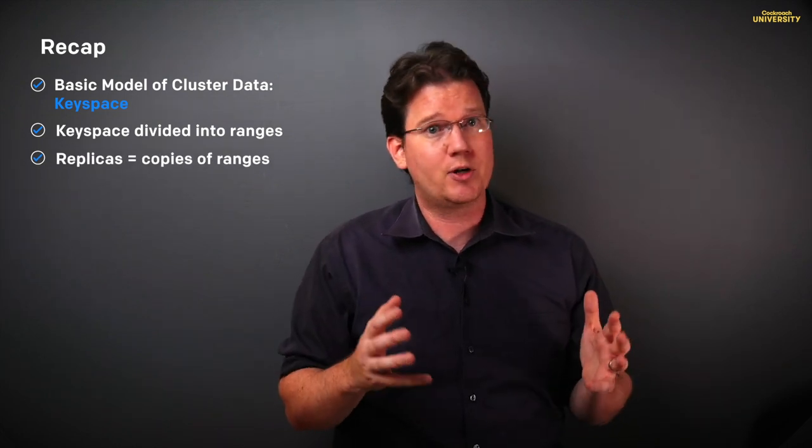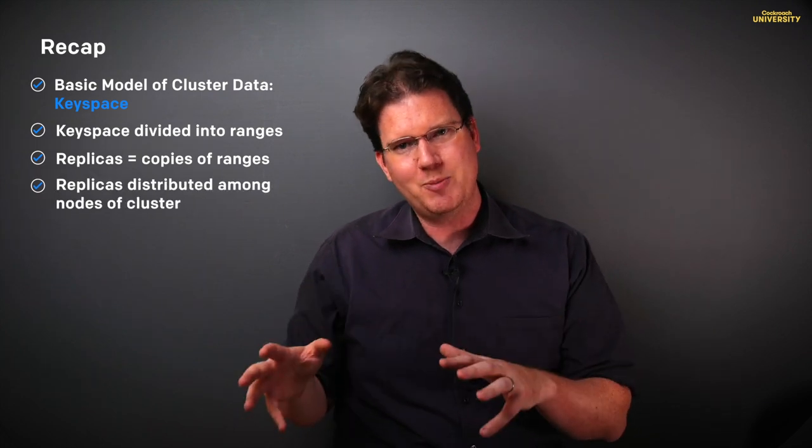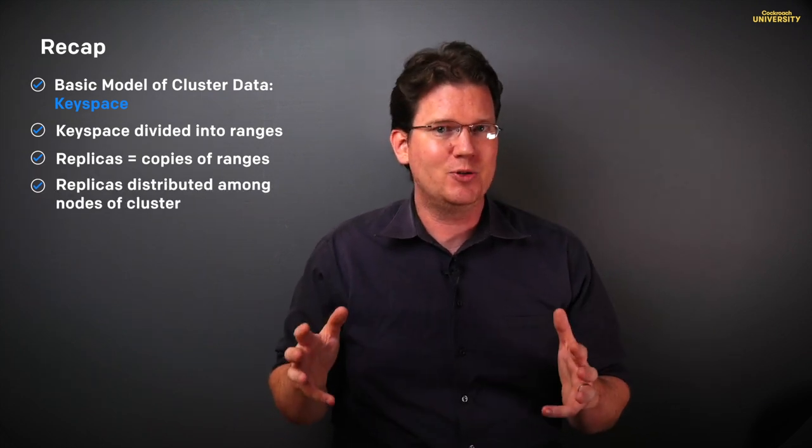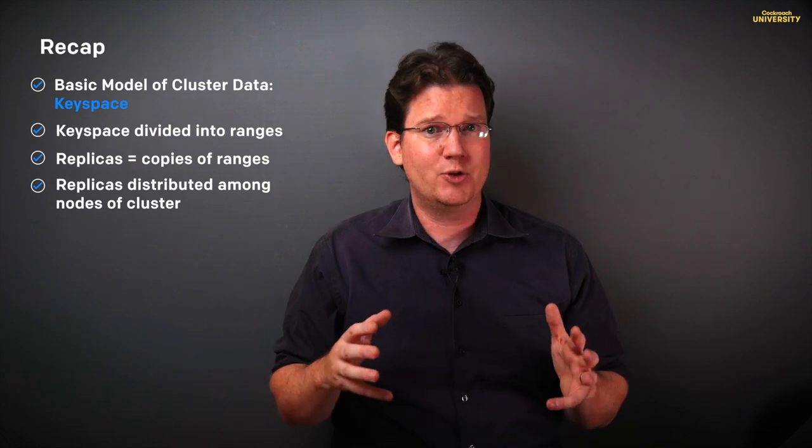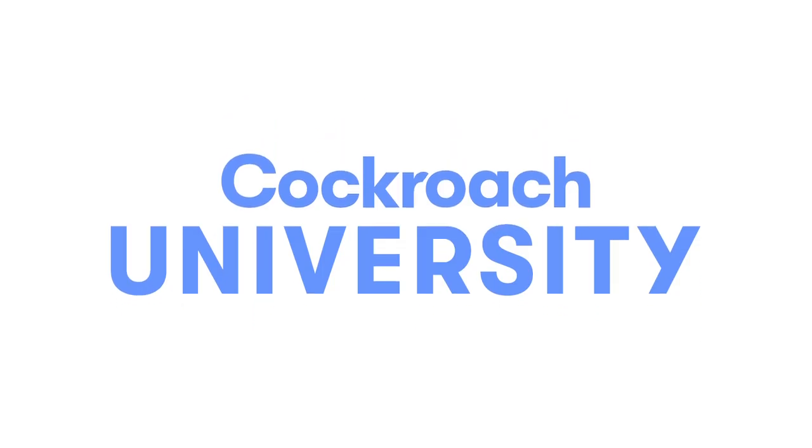Okay, that was a lot and fast, so let's review. In this lesson, we went over the basic model we should have in our head when we think about cluster data, the key space. We learned that CockroachDB takes the key space and divides it up into ranges, that it then makes copies of those ranges, called replicas, up to a replication factor, and that it distributes those replicas among the nodes of the cluster. Soon we'll see more, but that's it for this lesson.